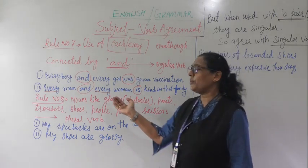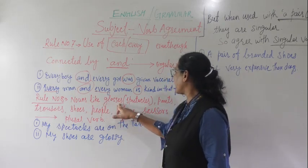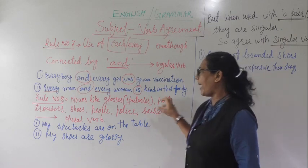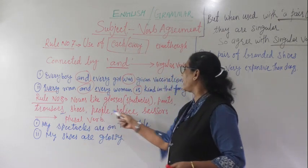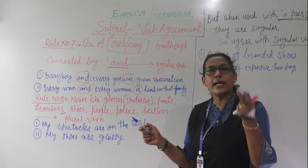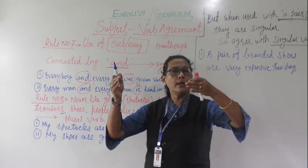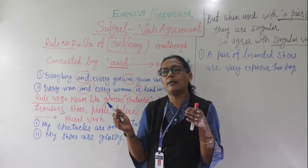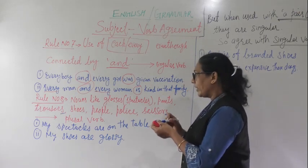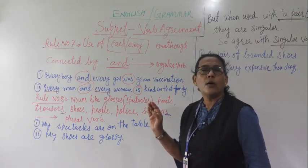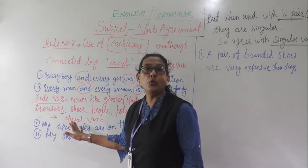Especially nouns ending with 'S' — like glasses, spectacles, pants, trousers, shoes, scissors. Police can vary according to the sentence; sometimes singular is also used. But generally these nouns, when they appear, take the plural verb — they agree with the plural verb.